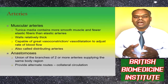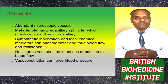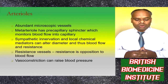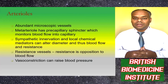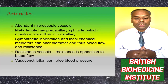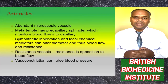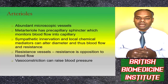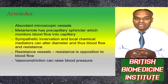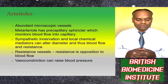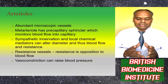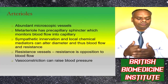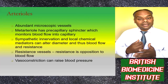Arterioles are abundant microscopic vessels. Meta-arterioles have pre-capillary sphincters that monitor blood flow into capillaries. Sympathetic innervation or local chemical mediators can alter their diameter, thus affecting blood flow and resistance. They are known as resistant vessels because they resist opposition to blood flow, and vasoconstriction can raise blood pressure.